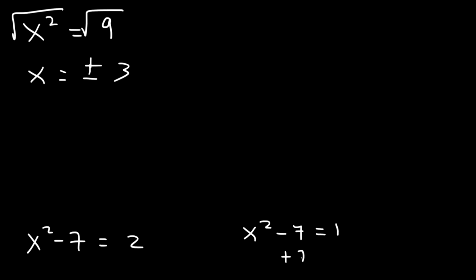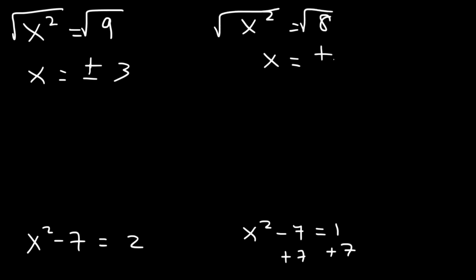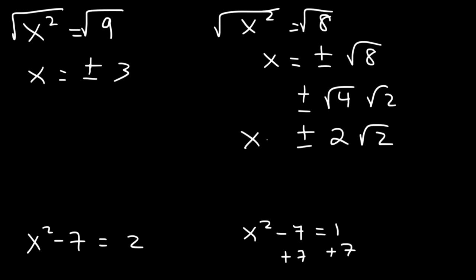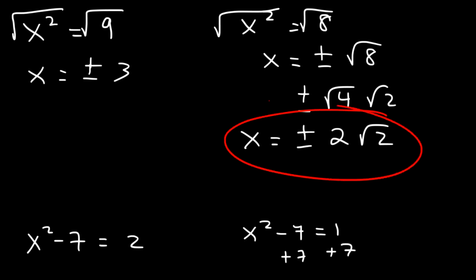For the second equation, x squared is equal to 8. Therefore x is plus or minus the square root of 8, which we can simplify. Since 8 is 4 times 2 and the square root of 4 is 2, x is equal to plus or minus 2 root 2. So the final solutions are plus or minus 3 and plus or minus 2 root 2.